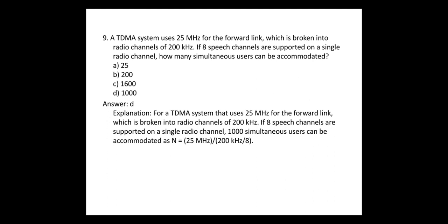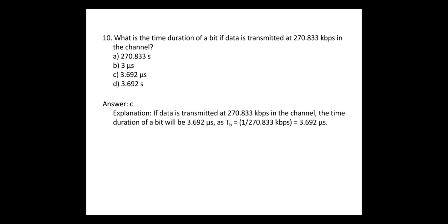The calculation is: N equals 25 MHz divided by 200 kHz, then multiplied by 8. Question 10: what is the time duration of a bit if data is transmitted at 270.833 kbps in the channel? If data is transmitted at 270.833 kbps, then the time duration of a bit will be 3.692 microseconds.